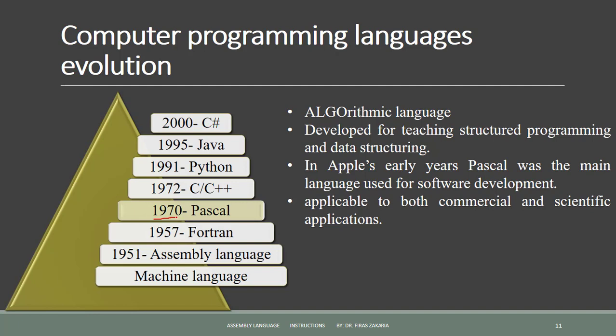Pascal language was developed in 1970. It is named after French physicist, mathematician, and philosopher Blaise Pascal, and was based on algorithmic language. In Apple's early years, Pascal was the main language used for software development, and even today it is still used to make Skype desktop applications. It is also applicable to both commercial and scientific applications.